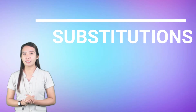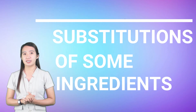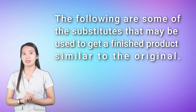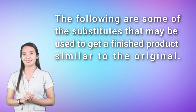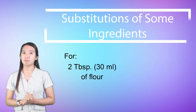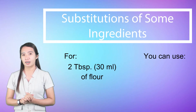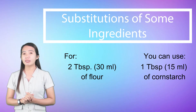Let us proceed to the substitutions of some ingredients. The following are some of the substitutes that may be used to get a finished product similar to the original. For 2 tablespoons or 30 milliliters of flour, you can use 1 tablespoon or 15 milliliters of cornstarch.